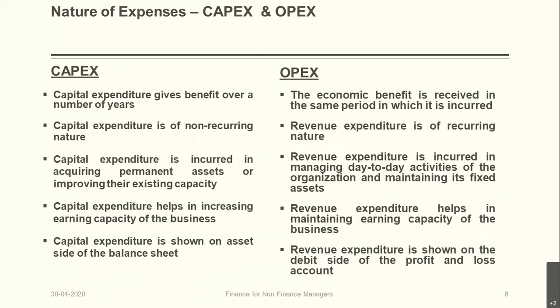Capital expenditure (CapEx) gives benefit over a number of years. For example, buying plant and machinery — the benefit accrues to the enterprise over its estimated useful life. CapEx is non-recurring; it does not happen on a regular basis but arises as and when needed. Capital expenditure is incurred in acquiring permanent assets or improving their existing capacity. If you are currently operating at a particular capacity and want to increase it, the expenditure incurred qualifies as capital expenditure. CapEx helps increase the earning capacity of the business and is shown as assets.